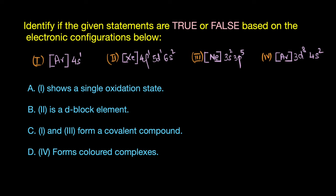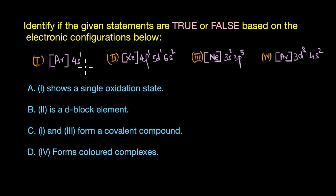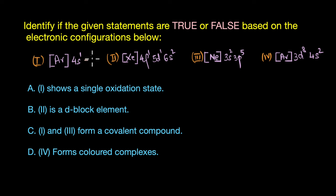The last question asks us to identify whether given statements are true or false based on the following electronic configurations: (1) Ar 4s1, (2) Xe 4f1 5d1 6s2, (3) Ne 3s2 3p5, and (4) Ar 3d8 4s2. Configuration 1, Ar 4s1, refers to the element potassium.